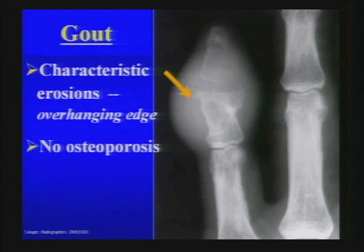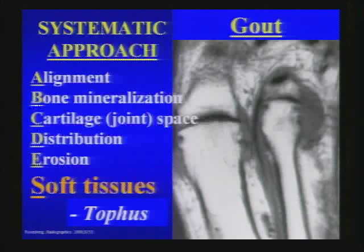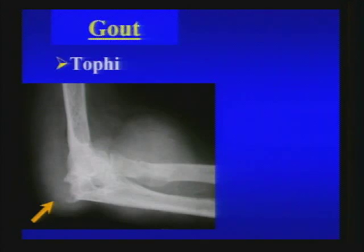Given the degree of articular involvement and soft tissue mass, there is relatively little osteoporosis in the adjacent bones. On MRI, look for eccentric or lobulated soft tissue prominence from gouty tophi associated with small eccentric erosions. These tophi can be quite prominent and cause erosions at other sites — here at the olecranon, here another one around the elbow.